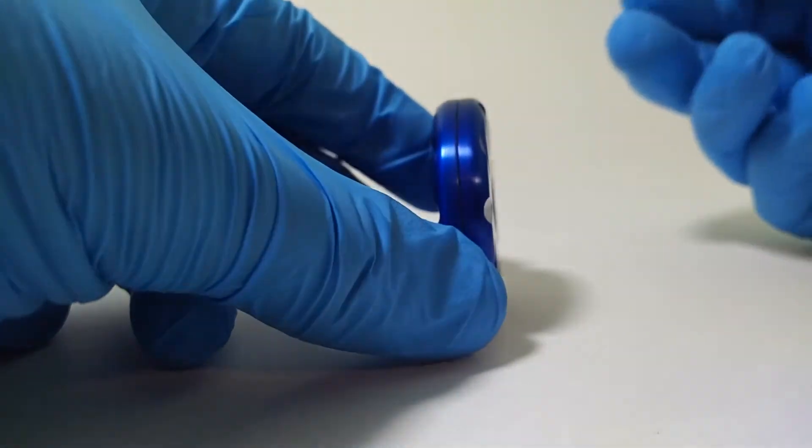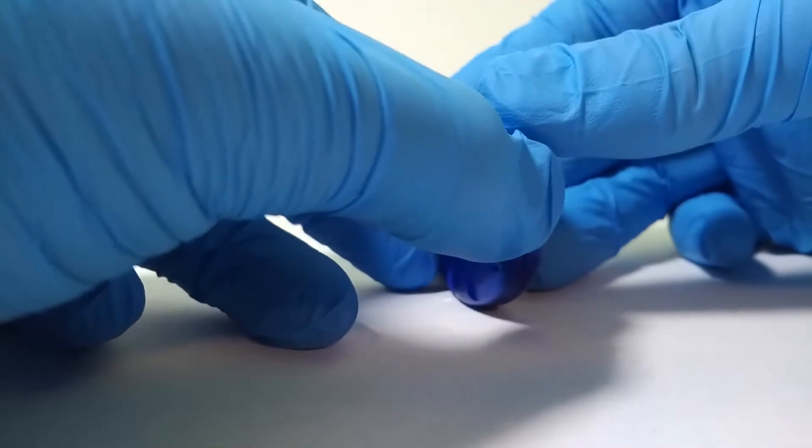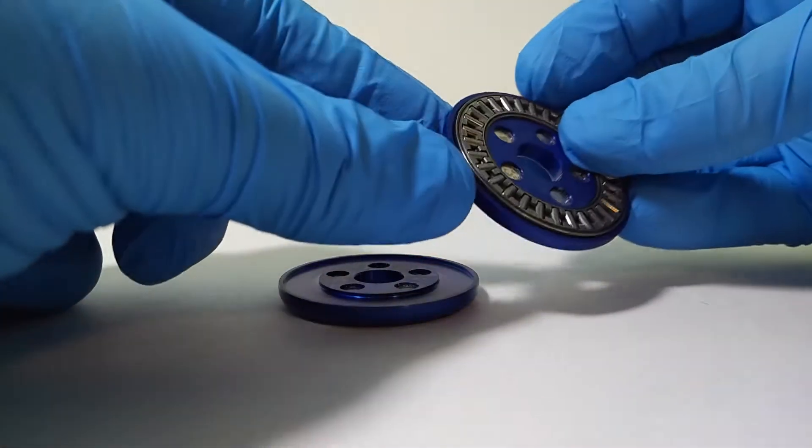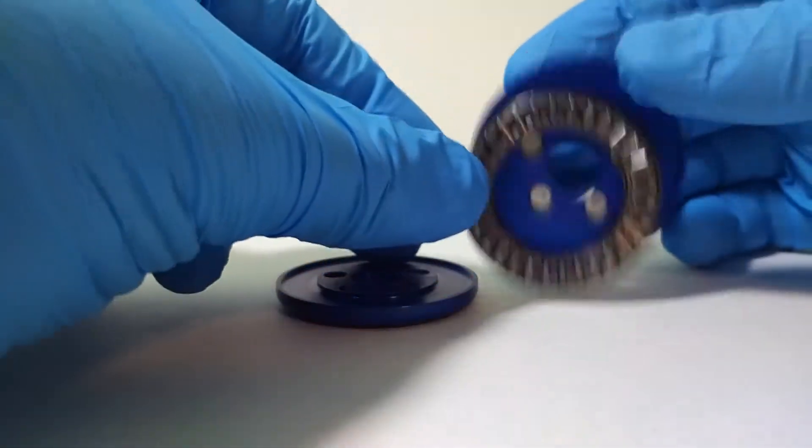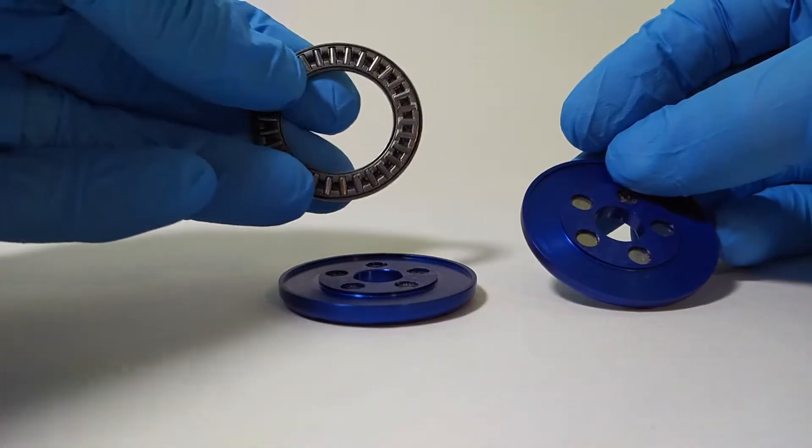The coin can be taken apart by splitting the two shells. Inside is a thrust roller bearing, which is easy to clean.